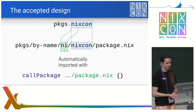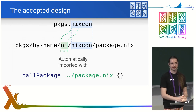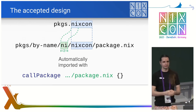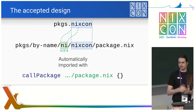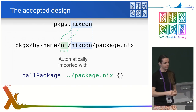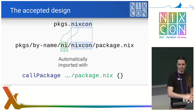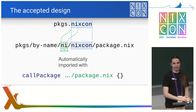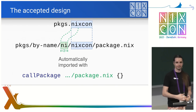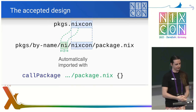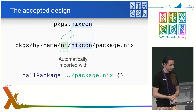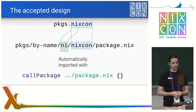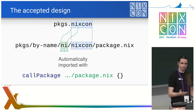This is the design that we have. Say you want to define a nixcon package. We start by creating this file using packages/by-name as the base directory of the standardized structure. We take the first two letters of the package name — also lowercased — then the package name itself, then package.nix. And once you have this file defined, it will automatically get added to the package set, notably with call-package and an empty attribute set.